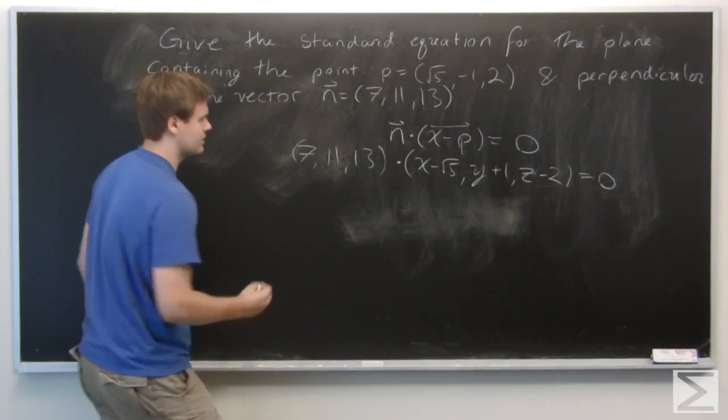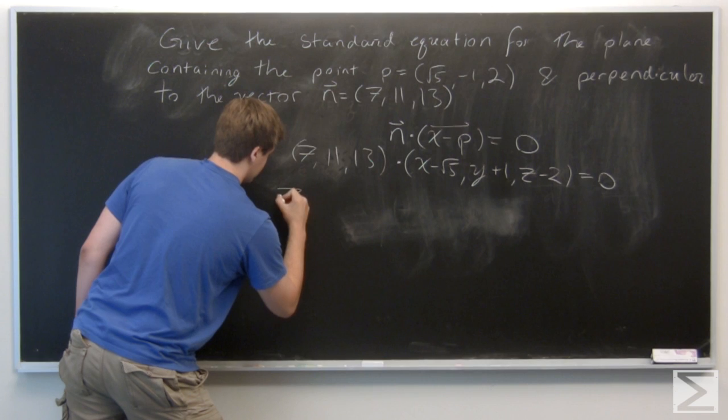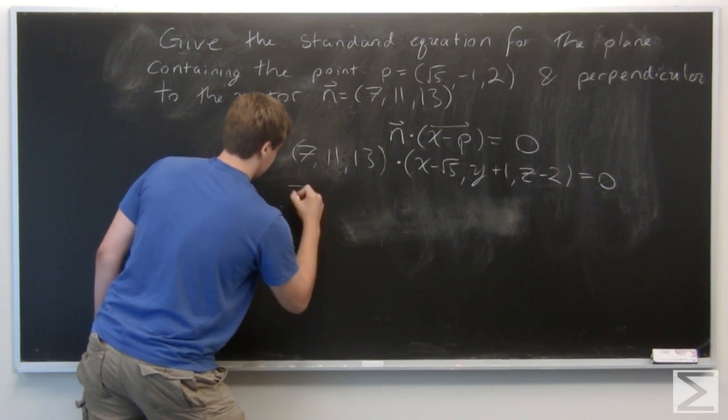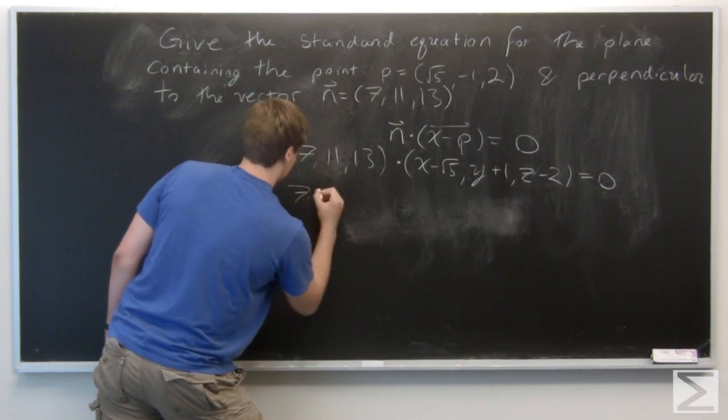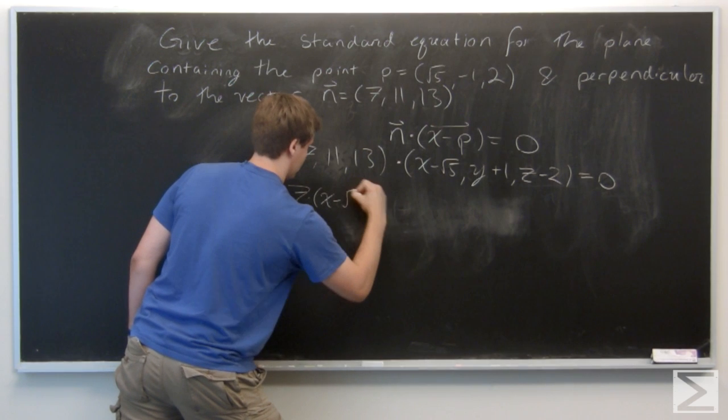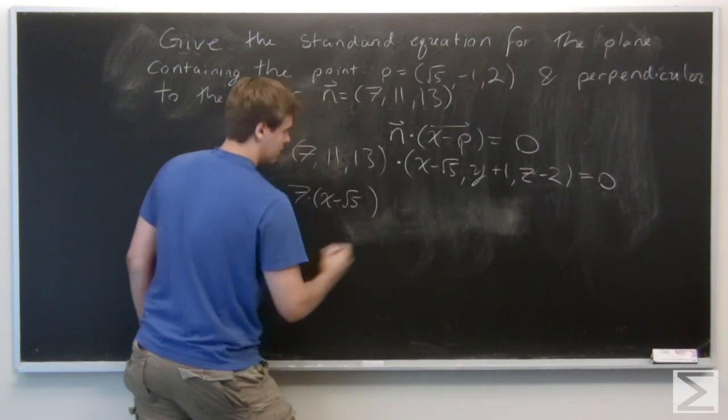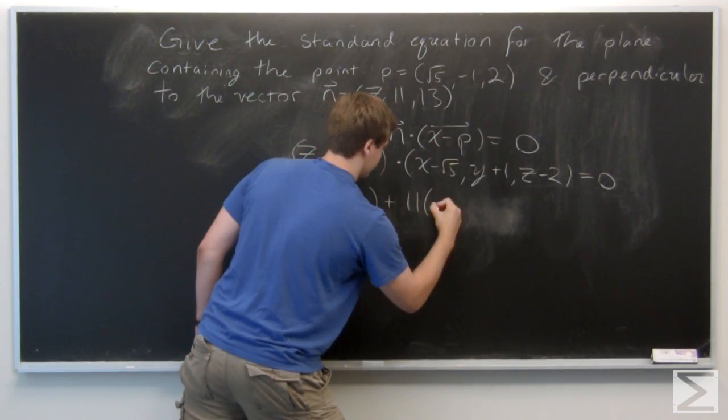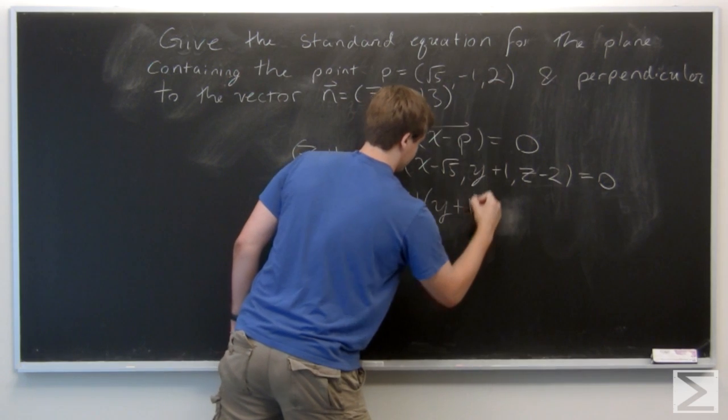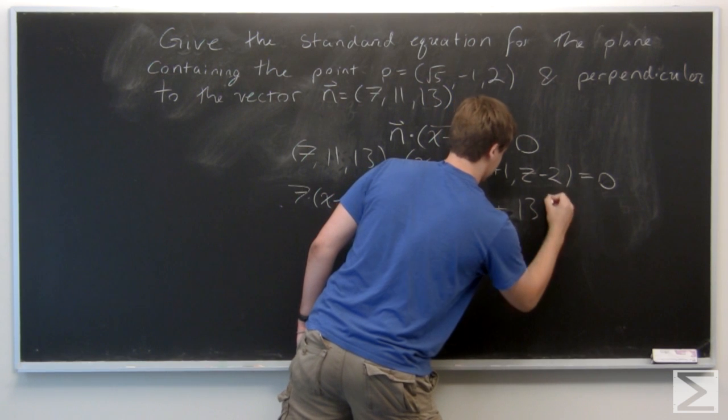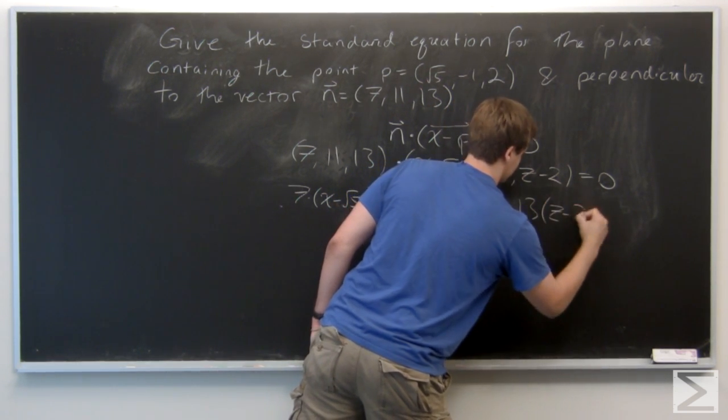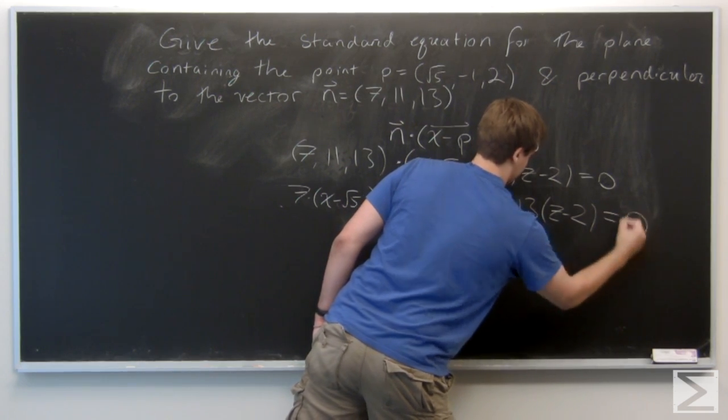Or even simpler, we can say it's just a set of points (x, y, z) such that 7(x - √5) + 11(y + 1) + 13(z - 2) equals 0.